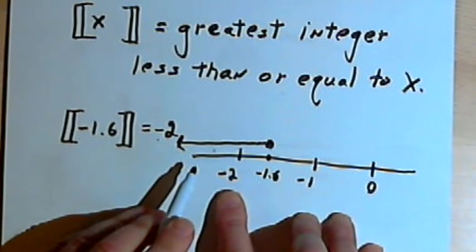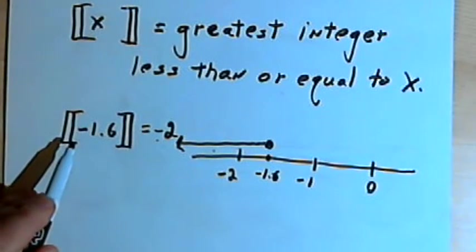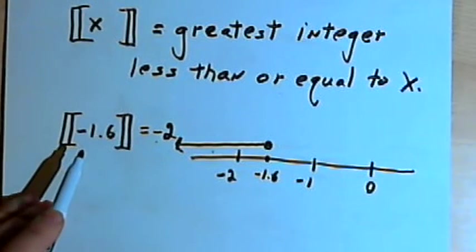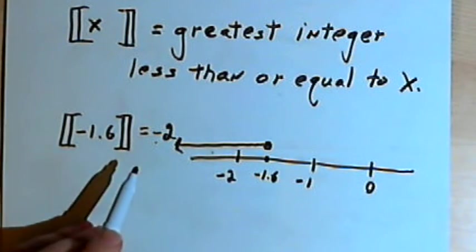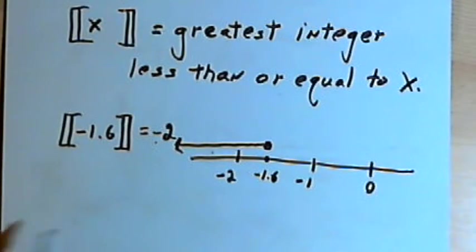So make sure that makes sense to you. My advice would be if you have to find the greatest integer value for a negative number, unless you're absolutely sure, draw a number line for yourself to make sure that your answer is right.